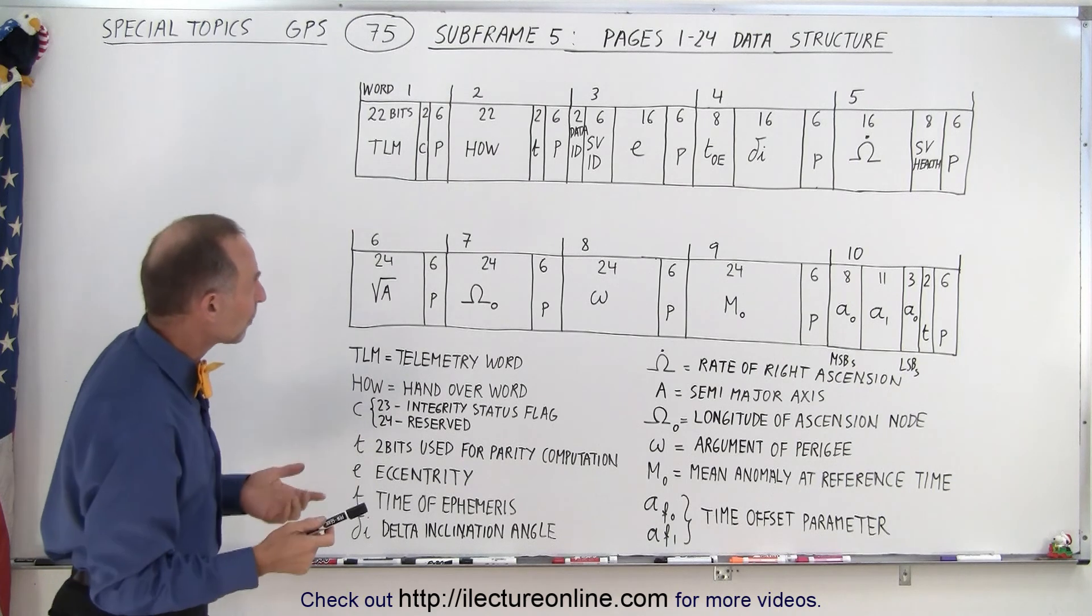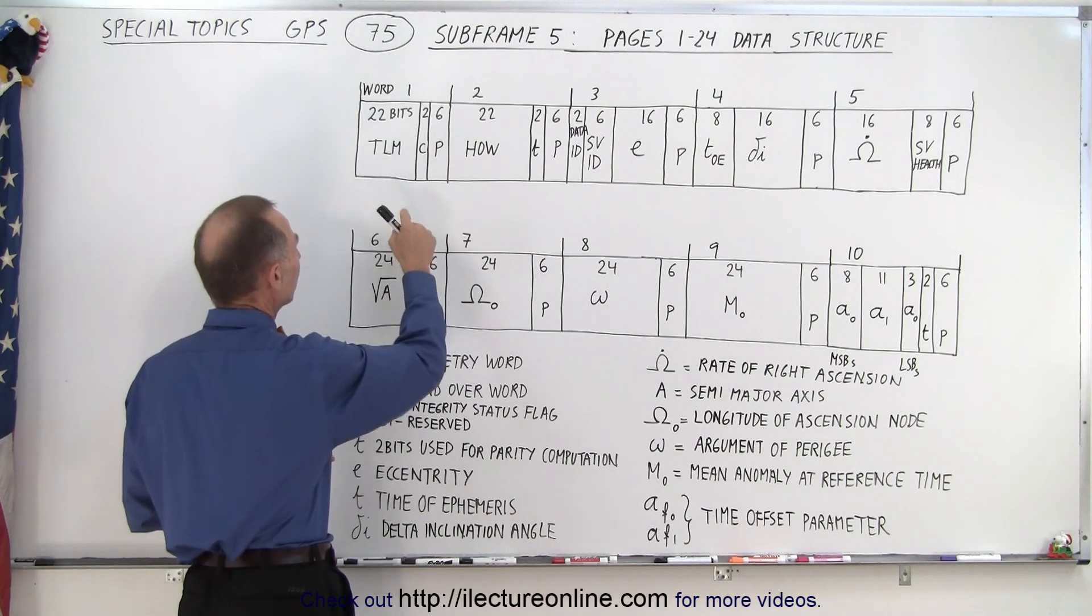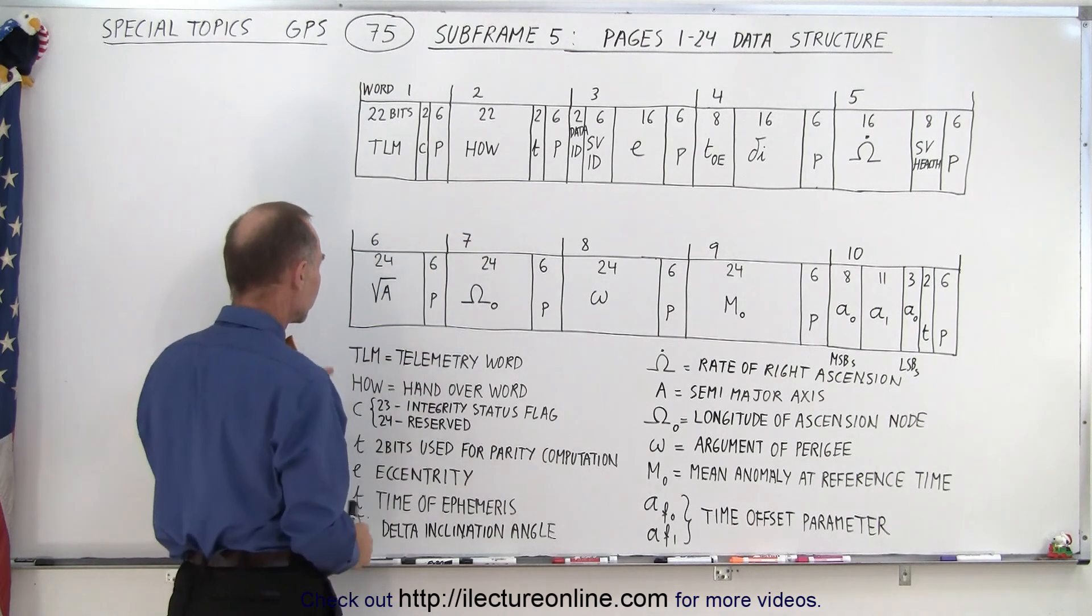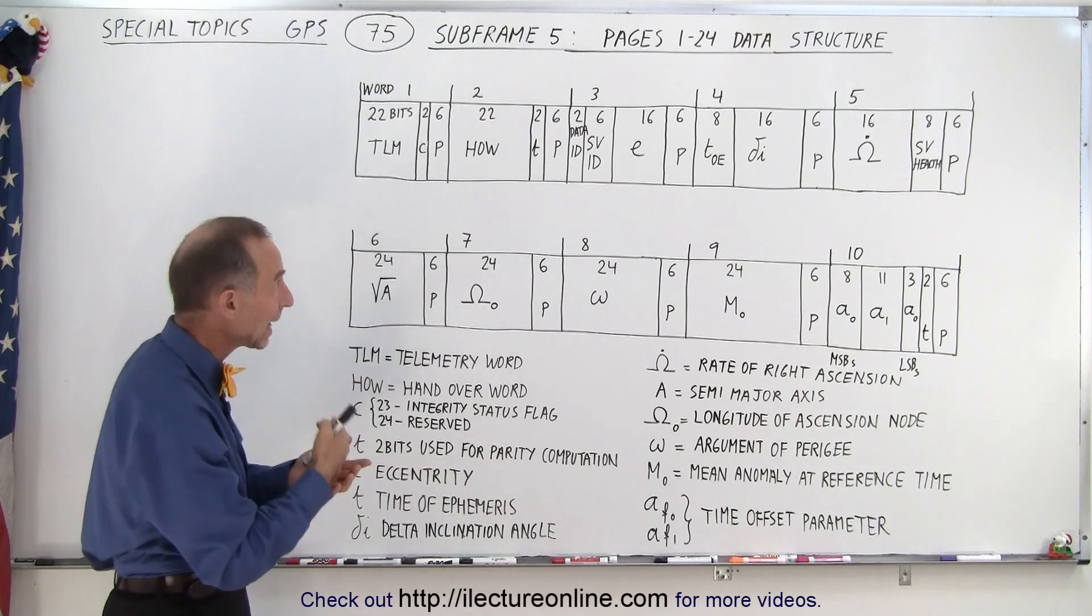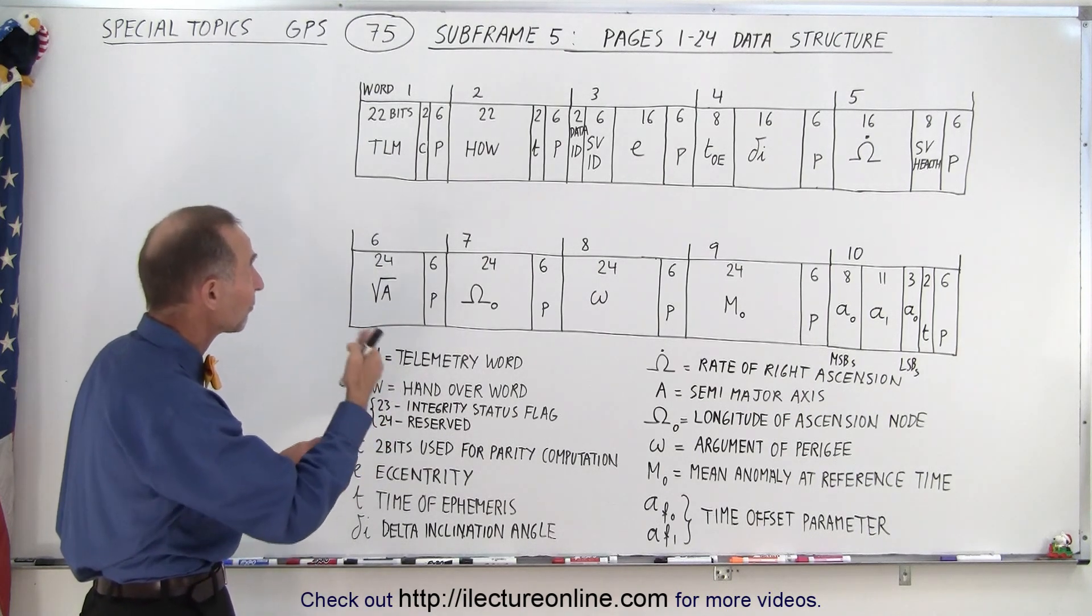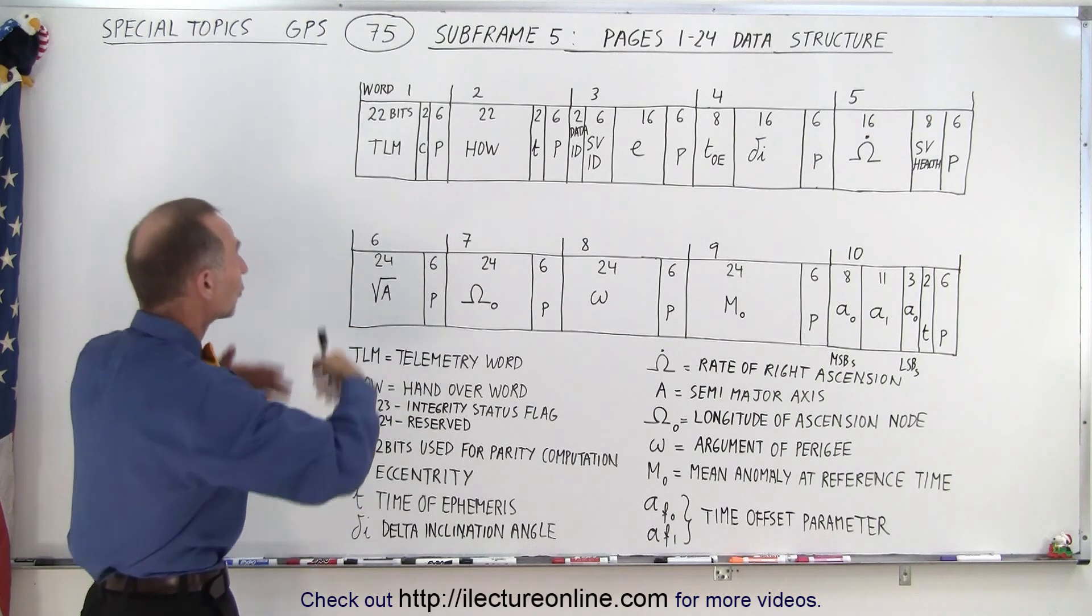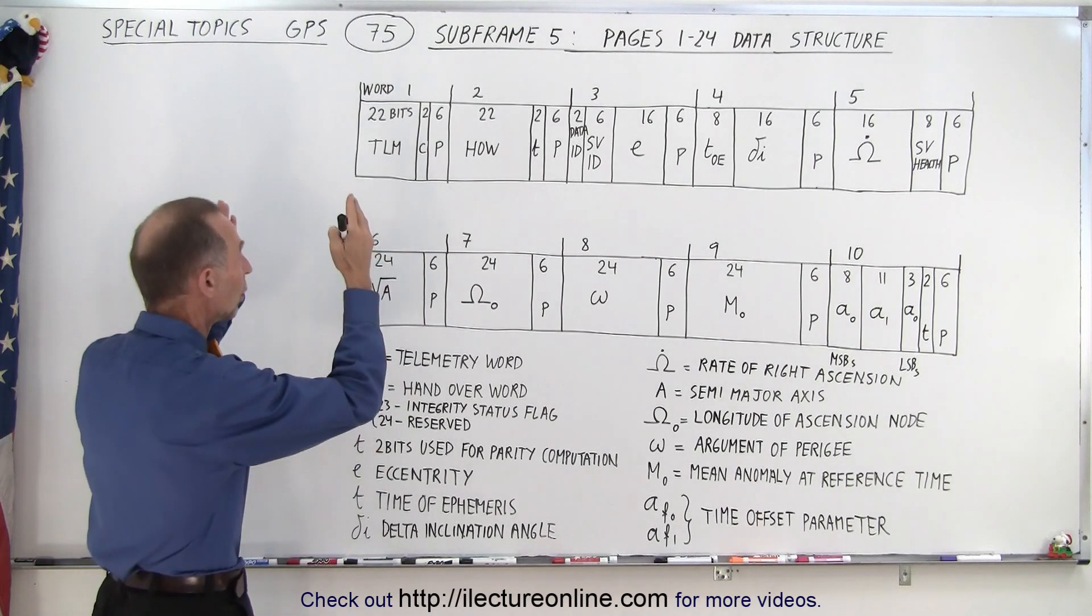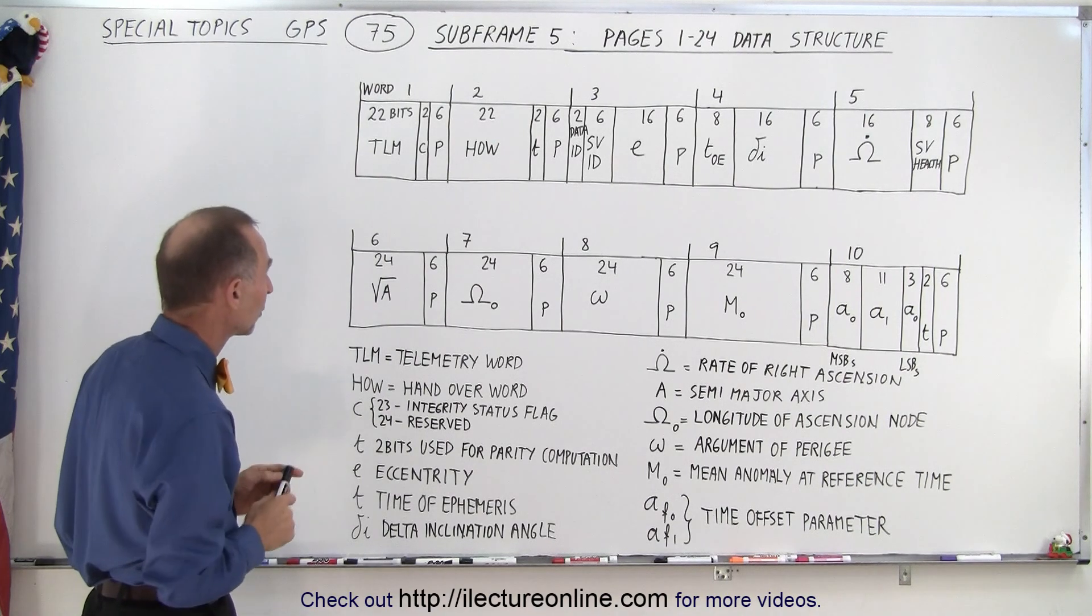As is typical for every subframe, the first two words are associated with the TLM and the HOW. The TLM is the telemetry word and the HOW is the handover word. So every single page of every single subframe 4 and 5 and every single word 1 and 2 of the other 3 subframes 1 through 3 all are similar in structure. They all have the TLM word and the HOW word.